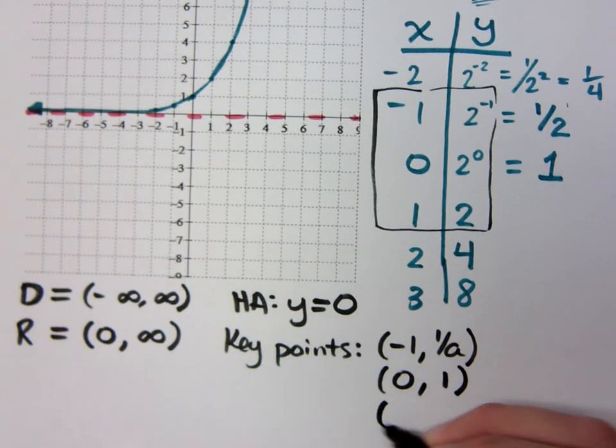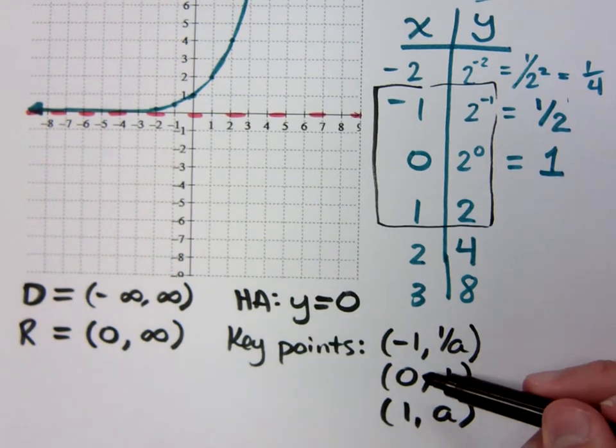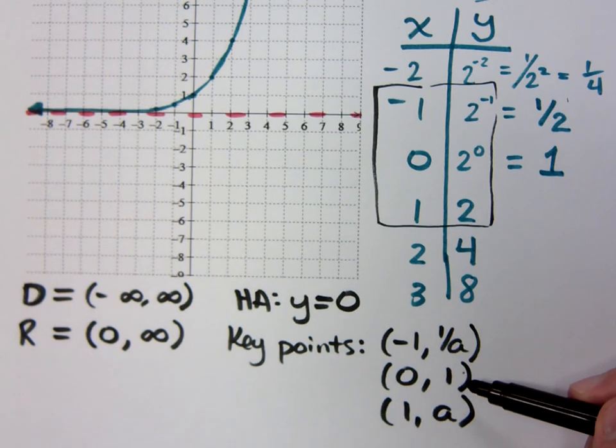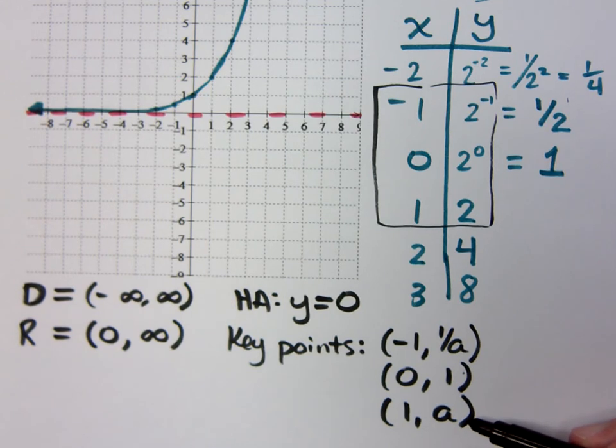The other key points would be zero, one, and one, comma, a. You plug in zero, anything to the zero is one, except, of course, for zero itself. But we're not having exponential functions with a base of anything less, including zero or less than that. If I plug in one, of course, I'm just going to get the base itself. So a to the first is just a.